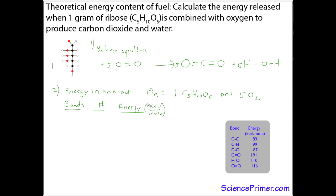So first, the inventory. There are carbon-carbon single bonds, carbon-hydrogen single bonds, carbon-oxygen single bonds, oxygen-hydrogen single bonds. In ribose, there's one carbon-oxygen double bond, and the molecular oxygen has oxygen-oxygen double bonds.